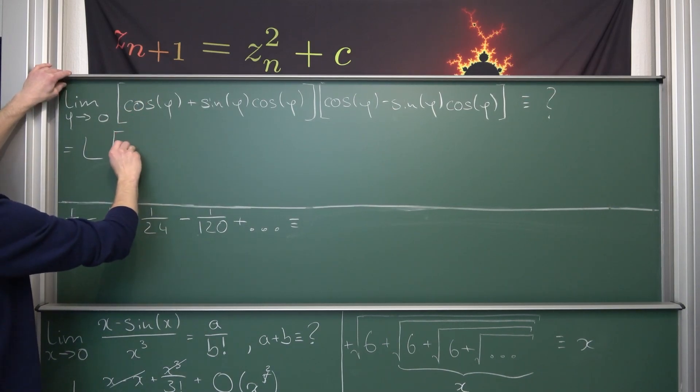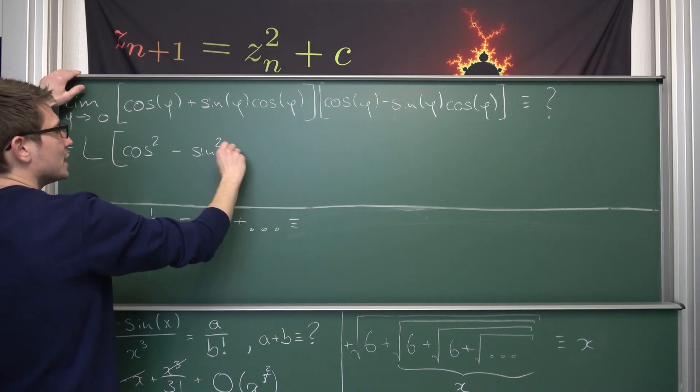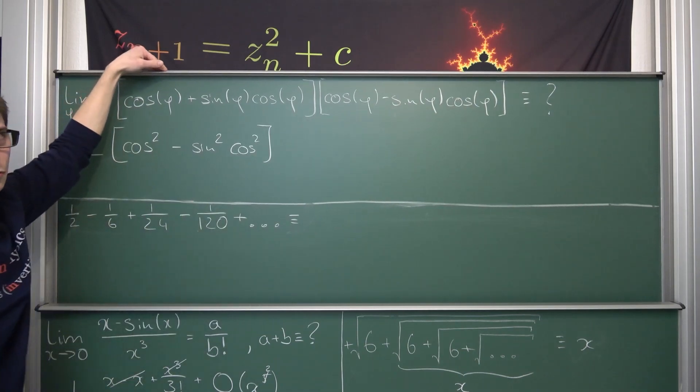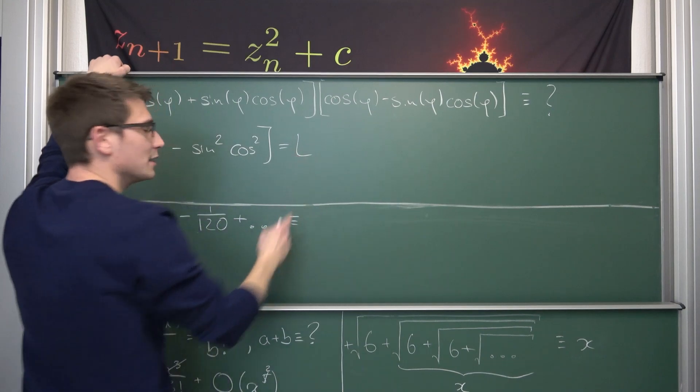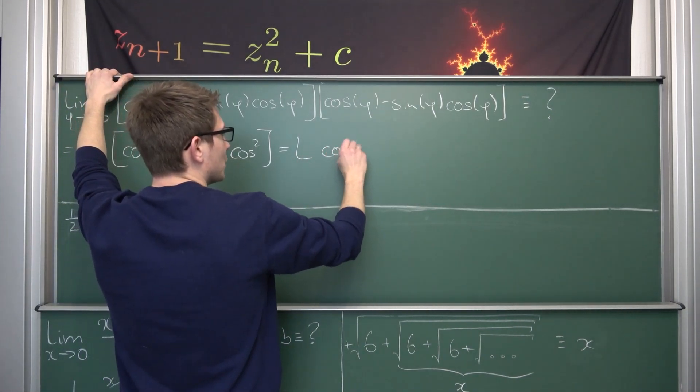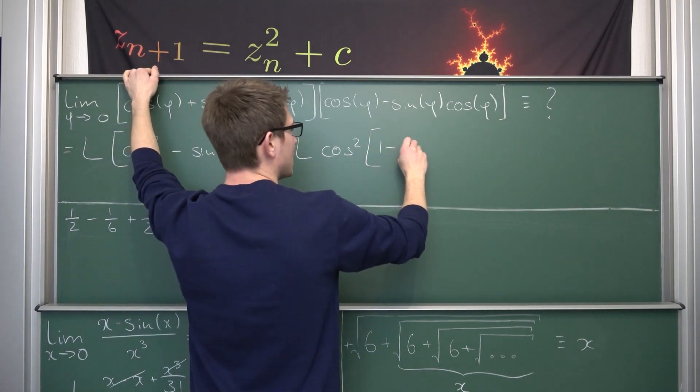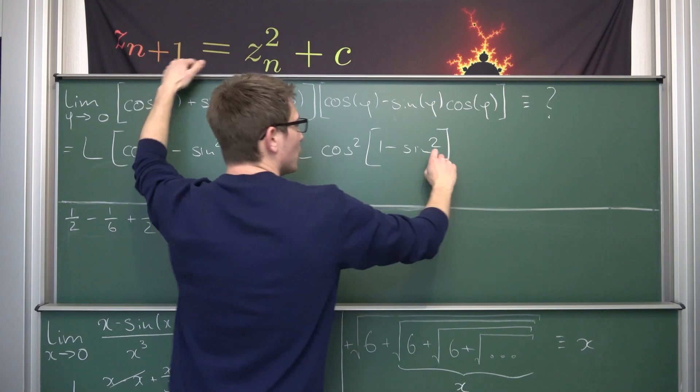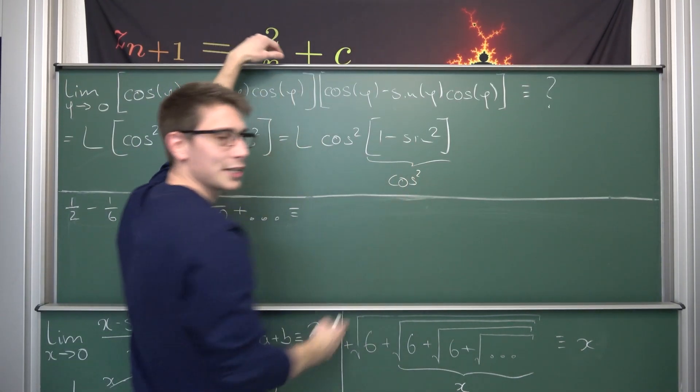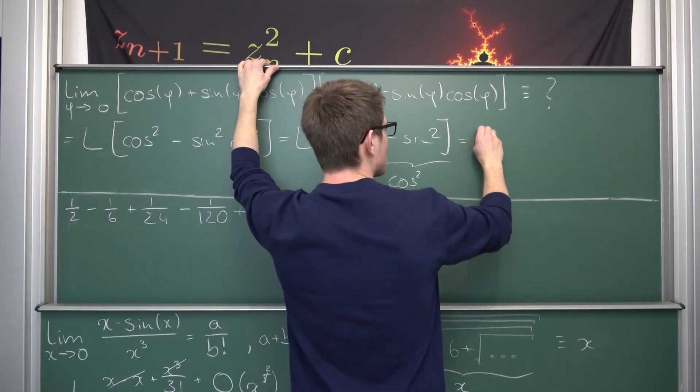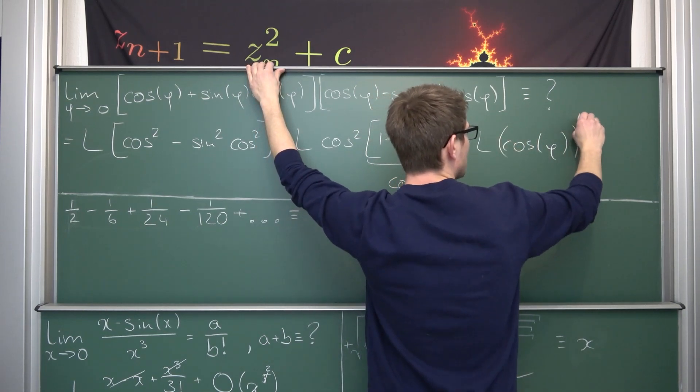Leaving us with the limit which I'm going to denote as capital L. The difference of two squares is going to give us the first member squared, so cosine squared and then negative sine squared times the cosine squared, and all of this with respect to phi. And now we are going to notice that we have cosine squared as a common factor giving us the limit as phi approaches zero of cosine squared multiply it with one minus the sine squared. Well, one minus the sine squared by the fundamental theorem of trigonometry is nothing but the cosine squared. Which is kind of cool, leaving us with the cosine to the fourth power.